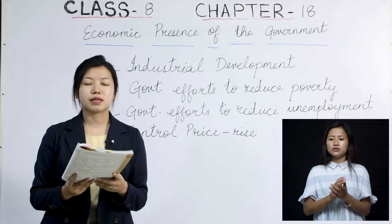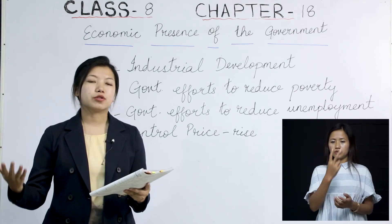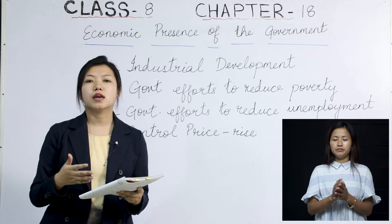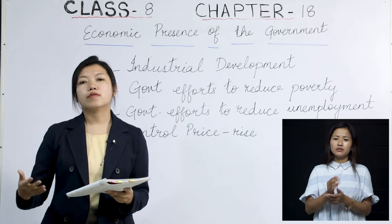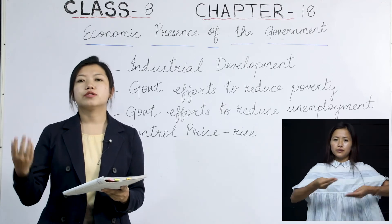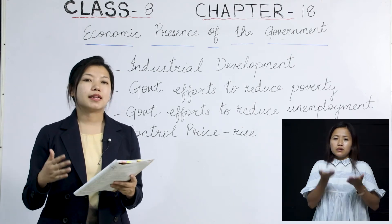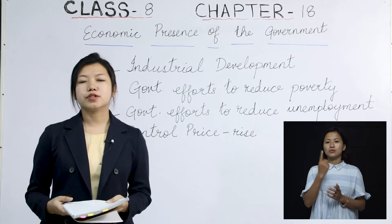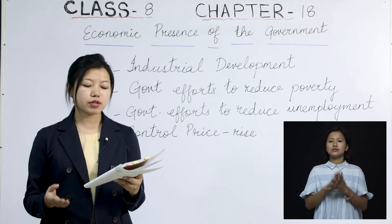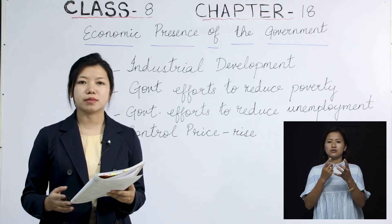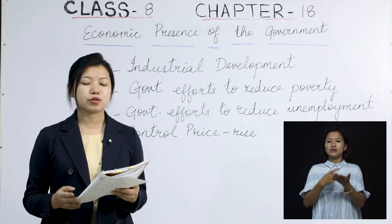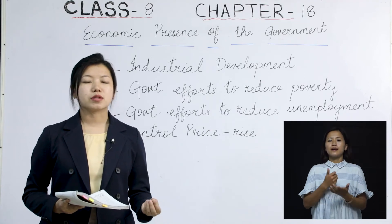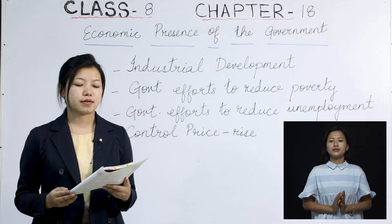Another measure is restricting disposable money incomes in the hands of consumers. The government checks on consumers and producers not working properly — for example, those who buy goods directly from farmers and sell at very high prices in other markets. The government keeps a check on them to ensure everyone gets goods at a fair and reasonable price. The public distribution system also ensures a continuous supply of essential goods at reasonable rates through ration shops and super bazaars.